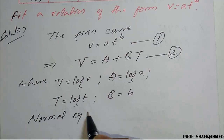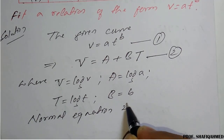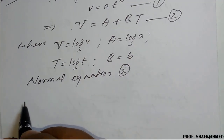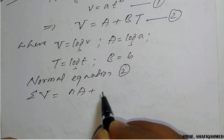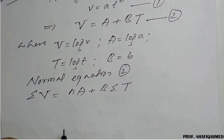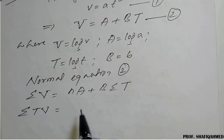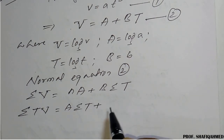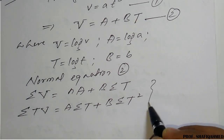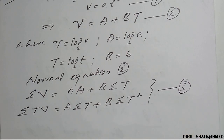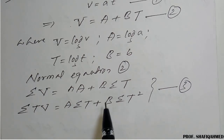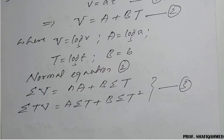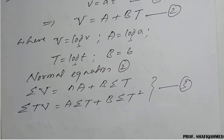The normal equations for equation 2 are: summation of V = N·A + B · summation of T, and summation of T·V = A · summation of T + B · summation of T². These are equation 3. We will prepare a table of values, compute the summations, and solve for A and B.